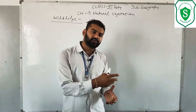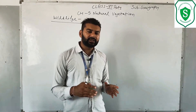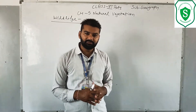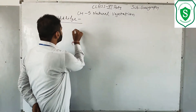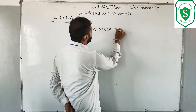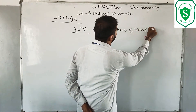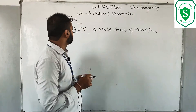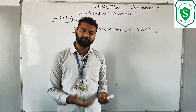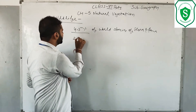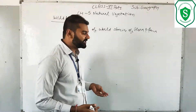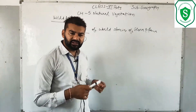India में diversity है flora and fauna की जो species है उसकी। India में worldwide flora and fauna की जो varieties हैं उसका 4-5% India में मिलता है। India में 4-5% of world species of flora and fauna मिलती है। India का जो area है वो world area का केवल 2.4% ही है, और फिर भी यहाँ 4-5% world biodiversity मिलती है।